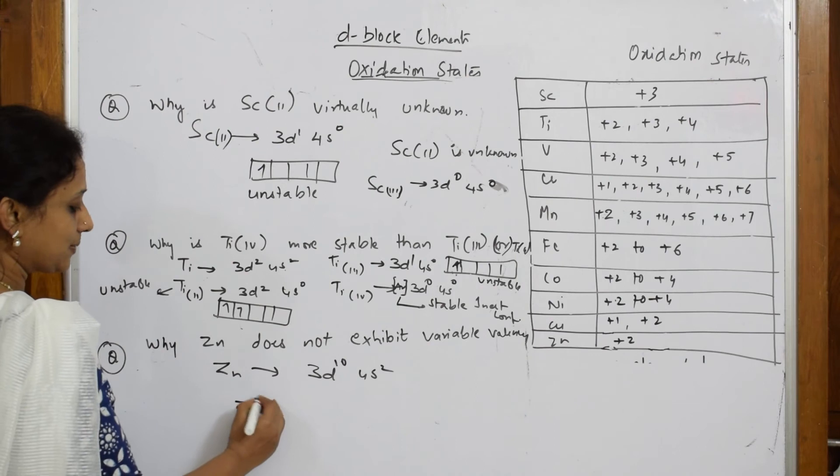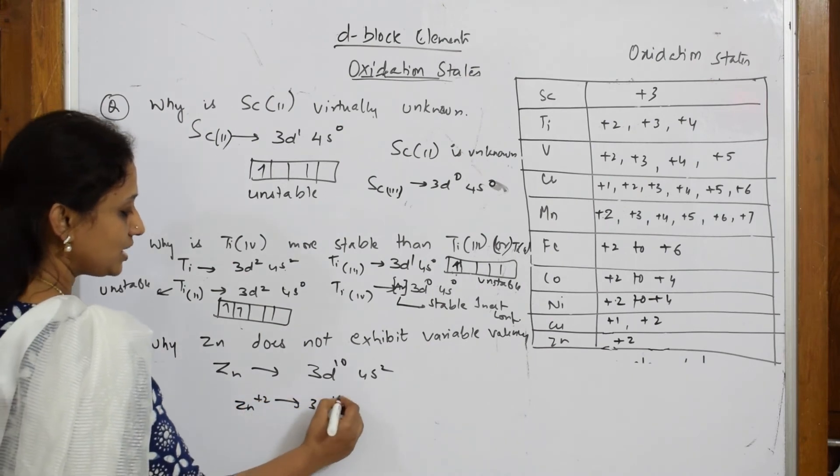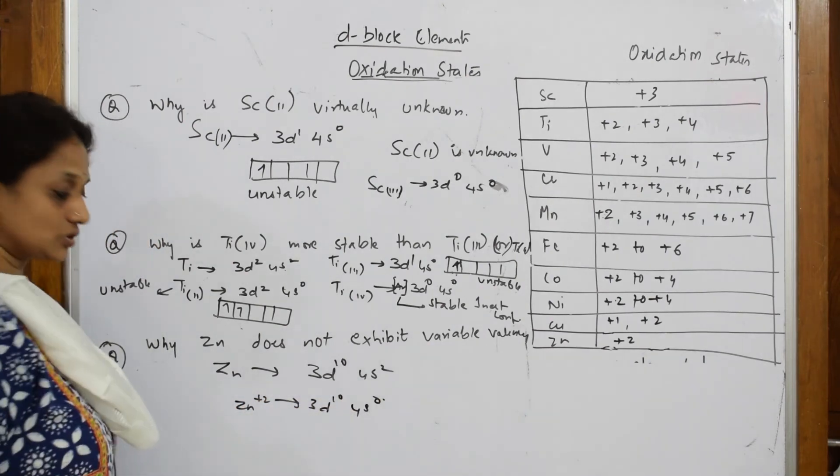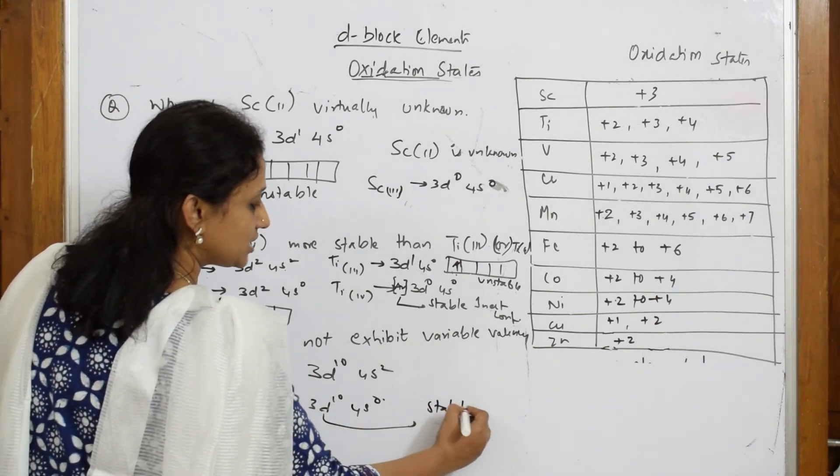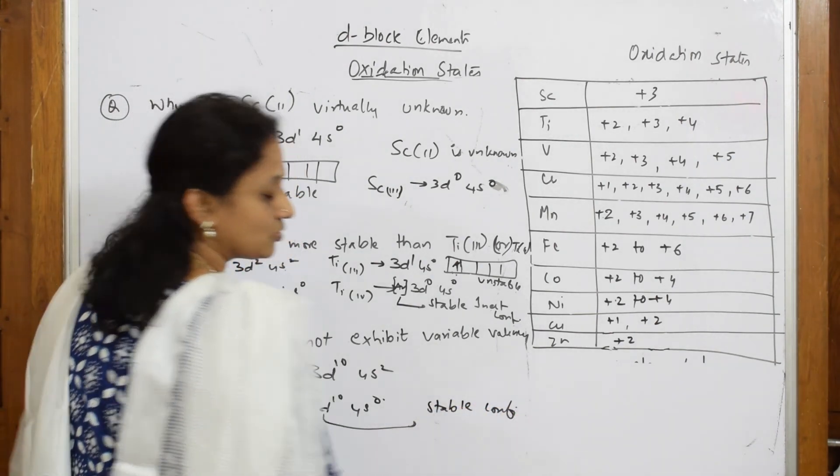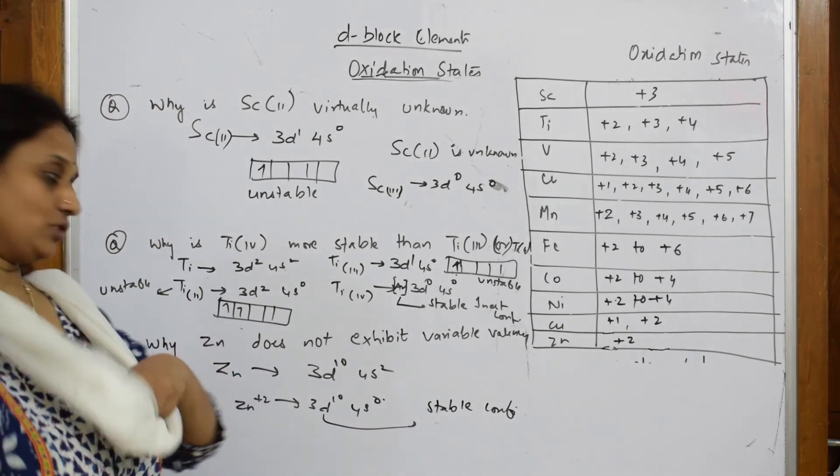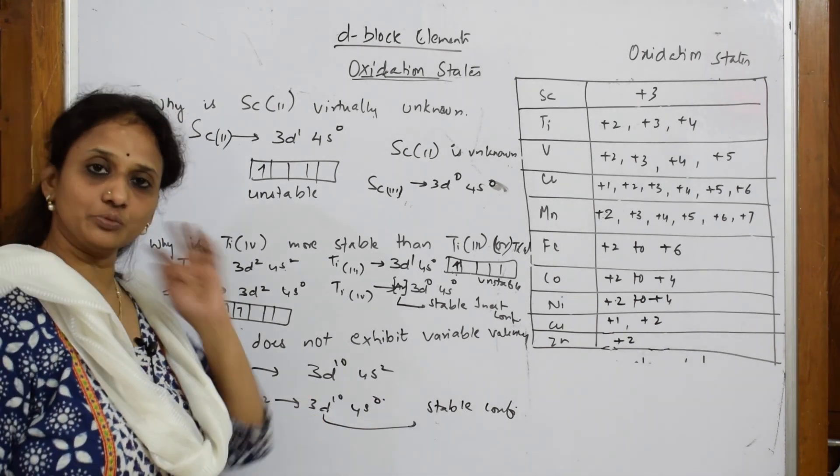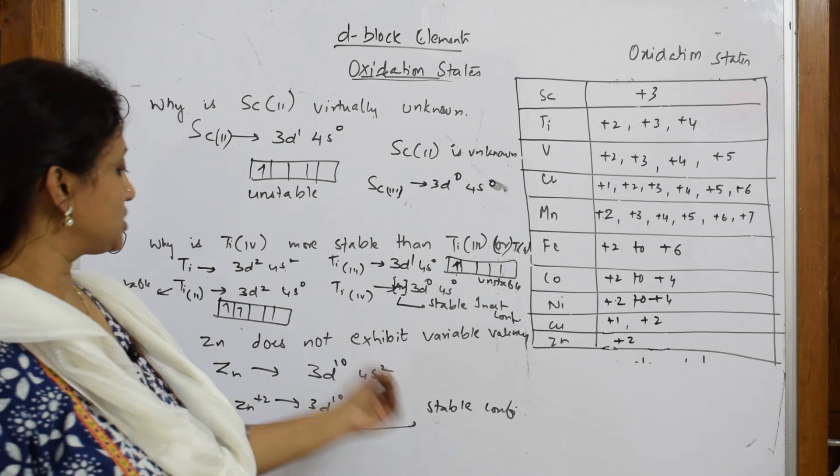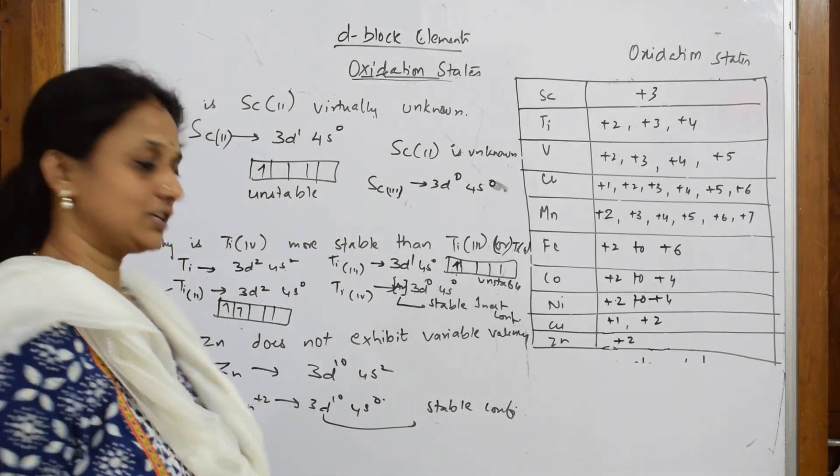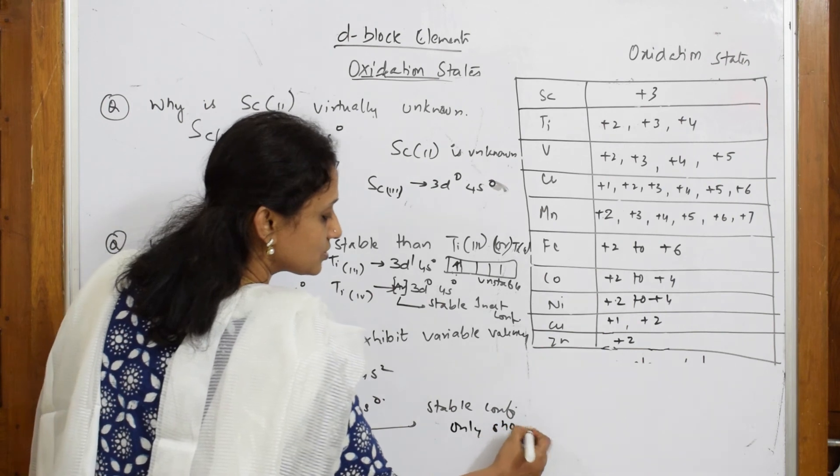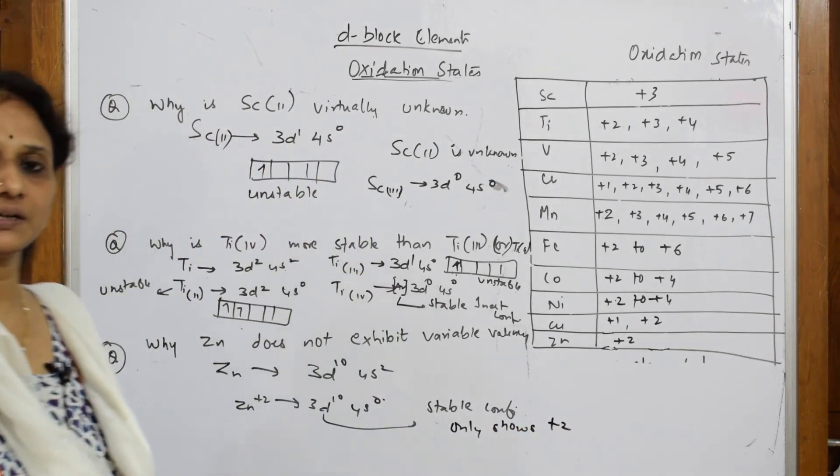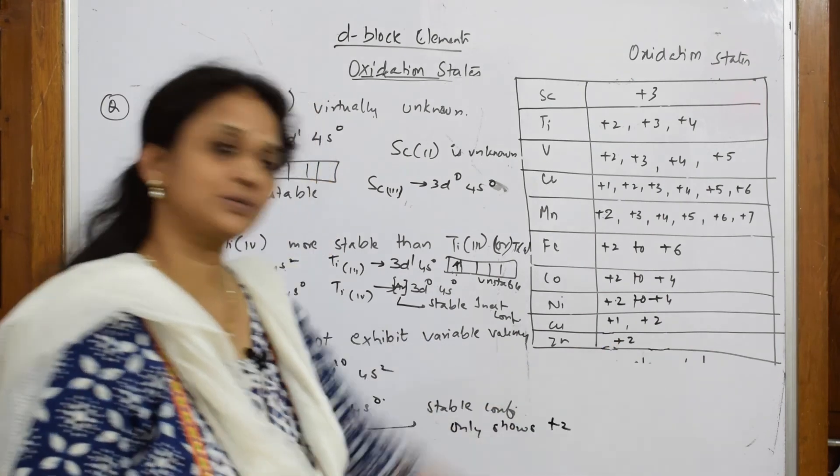When it is zinc +2, it is 3d10 4s0. What is it attaining? This is attaining stable configuration. So it can't expand its valency beyond that because it's very difficult to remove electrons from a stable configuration. Because of the stable configuration, it only shows +2 oxidation state, not beyond that. That's why we have written +2 here.